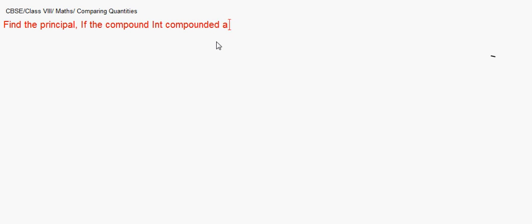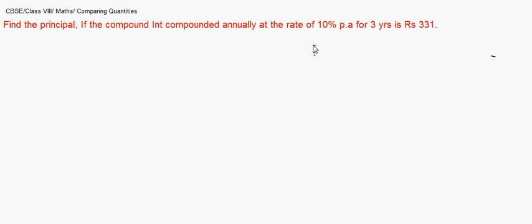My first question: find the principal if the compound interest, compounded annually at the rate of 10% per annum for three years, is rupees 331. We have to find the principal. Let's first note what we have to find — we have to find principal.